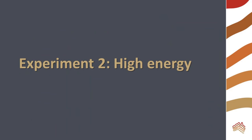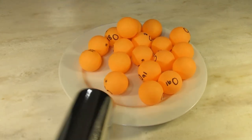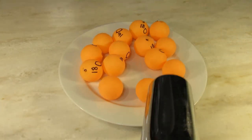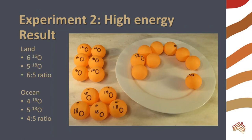For our second experiment, we will investigate what happens when there is a high amount of energy — this is a model of warm conditions. We will use the blow dryer more vigorously for this experiment. In the high energy experiment, 11 oxygens evaporated from our model ocean: 6 were O16 and 5 were O18. When there is more energy, it is more likely that O18 will evaporate. In this case, there would be a 6 to 5 ratio of O16 to O18 on land and a 4 to 5 ratio of O16 to O18 in the oceans.